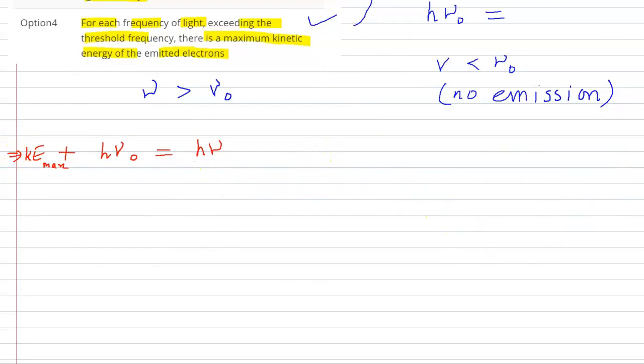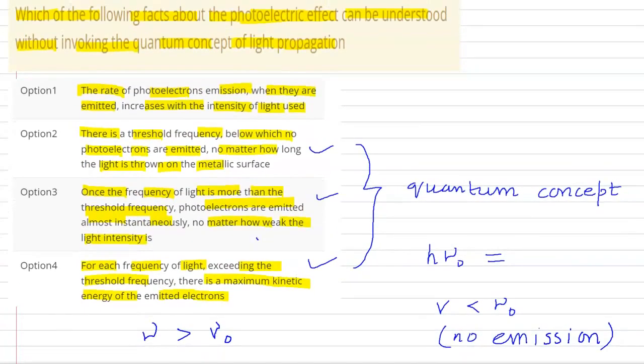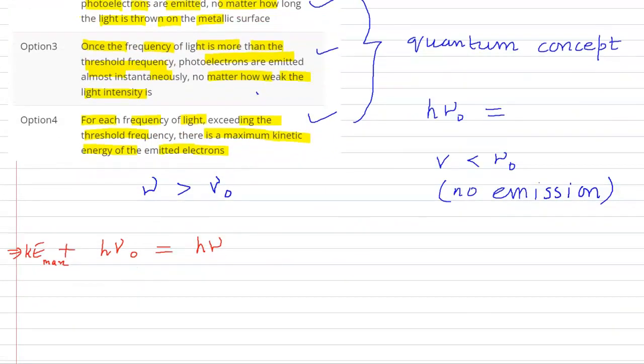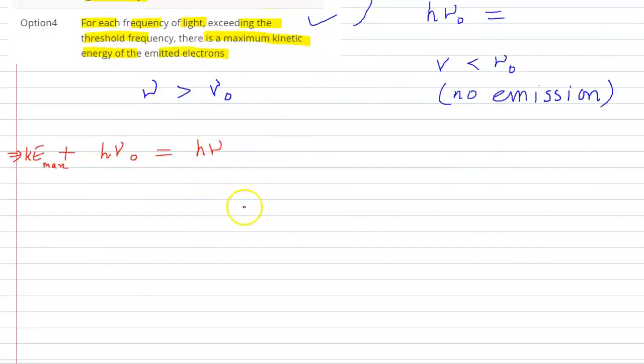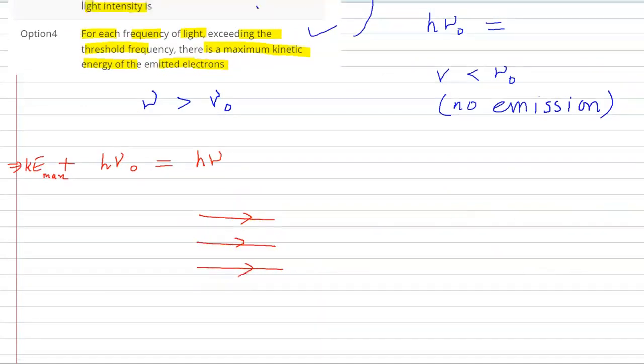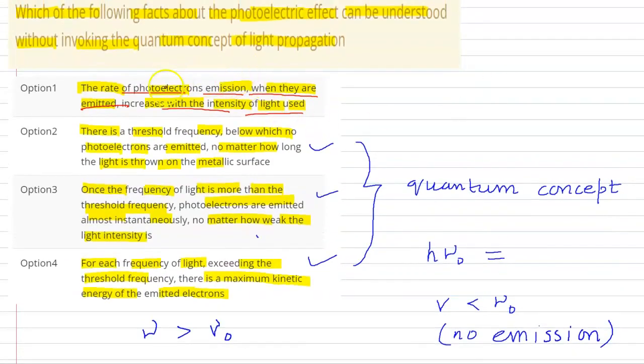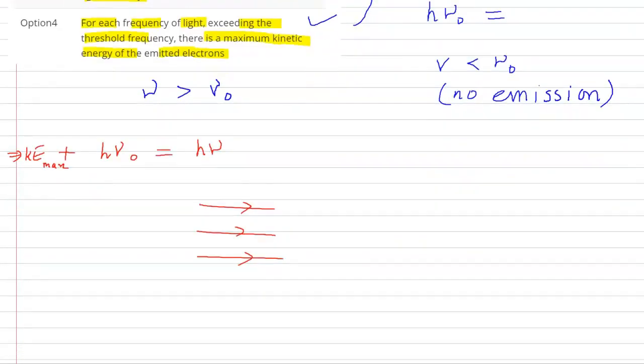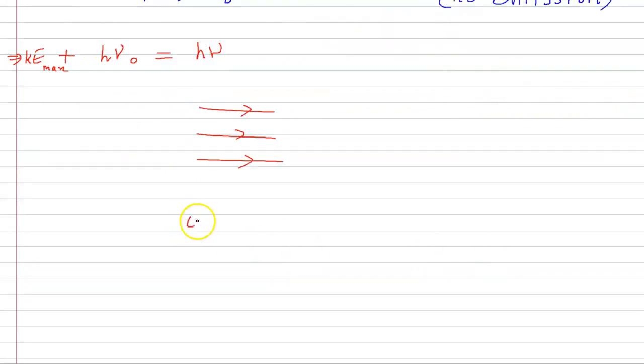This is also correct but again we are using quantum concept. Now coming to the first one, the rate of photoelectrons emission when they are emitted increases with the intensity of light used. Agar apan light ki intensity bada rahe hai toh obvious se baat hai ki jo rate hoga photoelectrons ke nikalne ka wo increase hoga. This is common sense or normal physics. So option number one is correct. We will go with option number one.